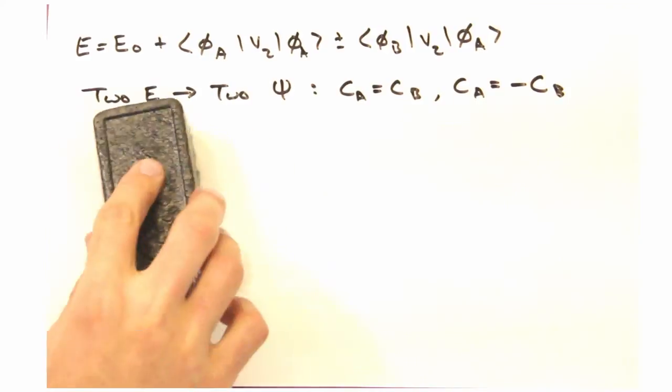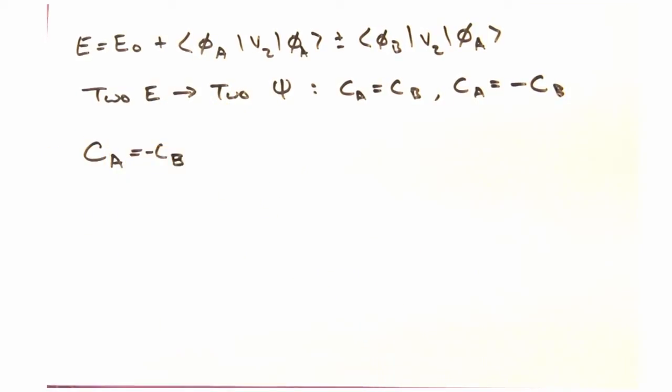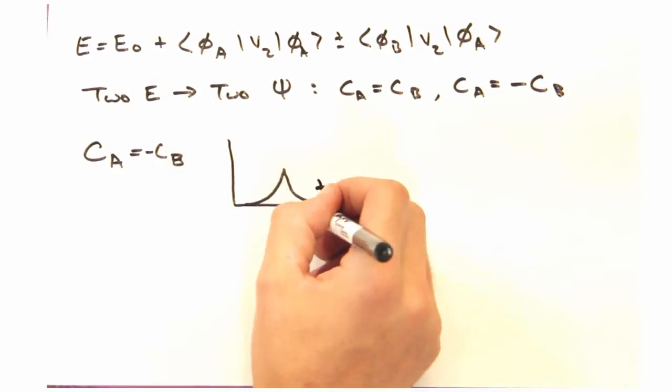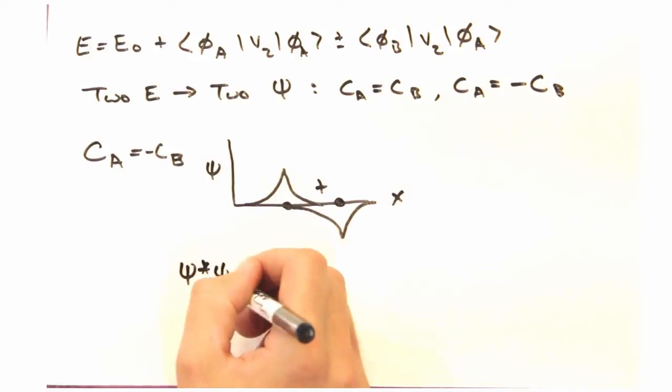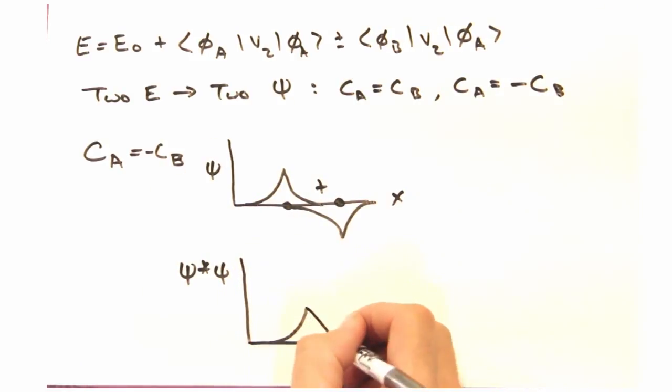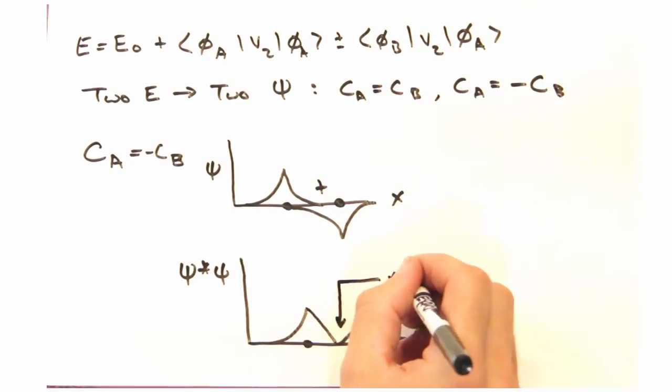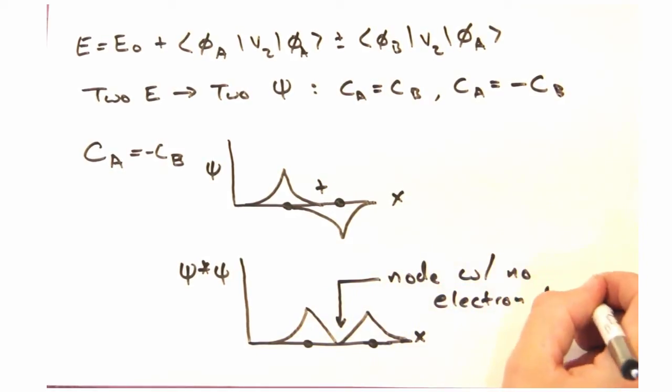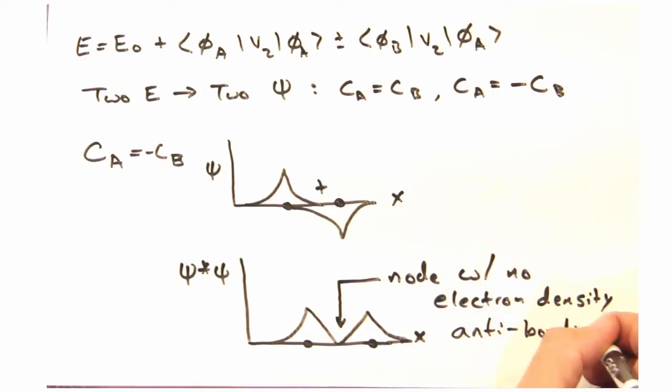Exactly. And we can look at the other solution that's at higher energy. With the sine switch, the total wave function looks like this. The electron density must have a node in between the two nuclei. Yeah, this node looks kind of crazy. We're basically saying that the electrons would rather be outside of the two nuclei, rather than in between them. But that's why this is the higher energy solution. This must be the anti-bonding case.